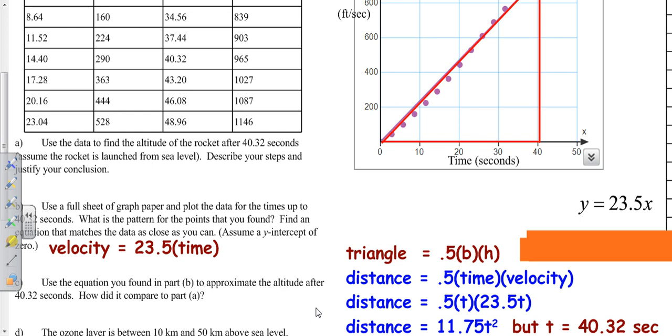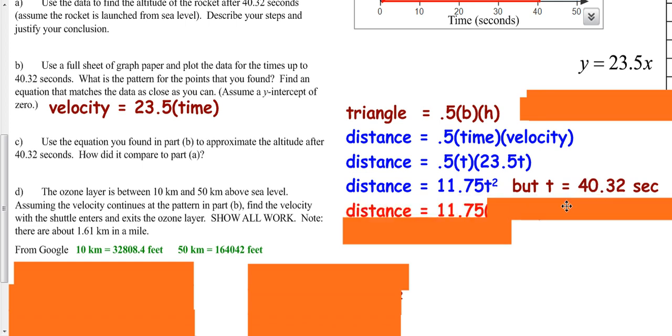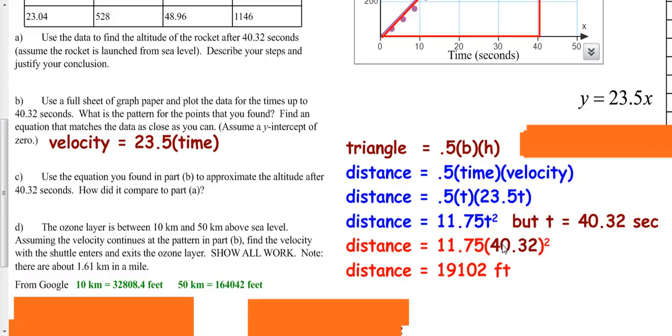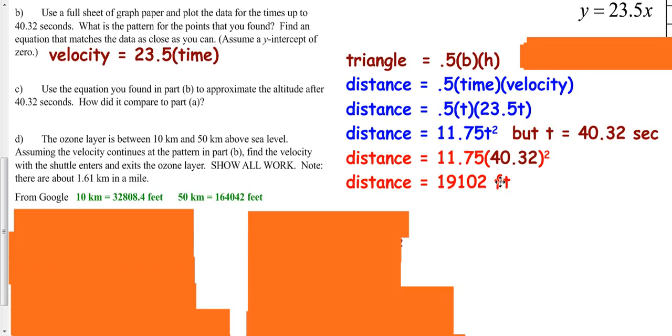For part C, we know our time is 40.32 seconds, so we can take 40.32 and plug it in. Working that out, we get our distance with appropriate units of feet, because we're dealing with feet per second up here and feet per second times seconds leaves us only with feet.